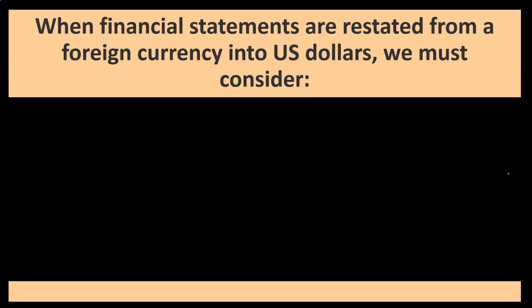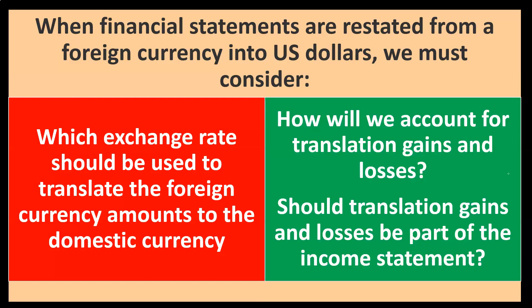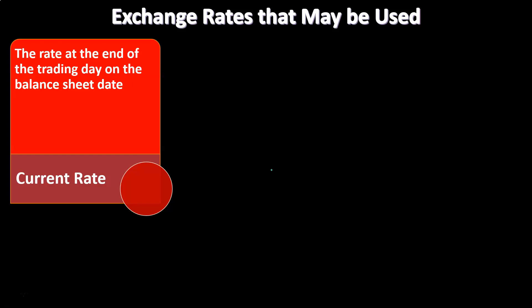When financial statements are restated from a foreign currency into U.S. dollars, we must consider which exchange rate should be used to translate the foreign currency amounts to the domestic currency. We'll have to determine what exchange rate we are going to use in order to do so. How will we account for translation gains and losses? Should we put the translation gains and losses as part of the income statement, reporting the gains and losses that are due to the translation process?